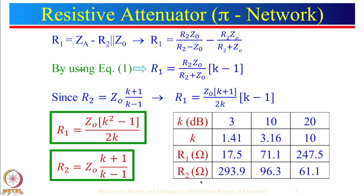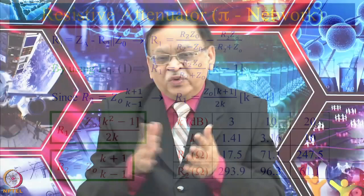There are many other applications where variable attenuators are required. Let me first finish the fixed attenuator — here the resistor values are fixed, hence there will be a fixed attenuation. We can use variable resistors R1 and R2, but we will instead show applications using the PIN diode covered in the previous lecture. Today we will see how PIN diodes can be used as variable attenuators.